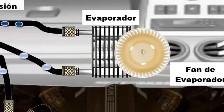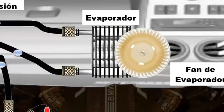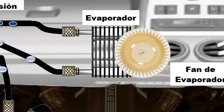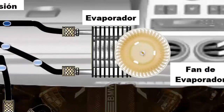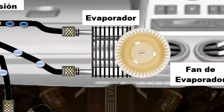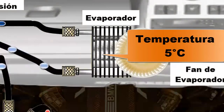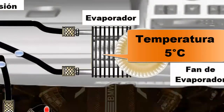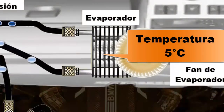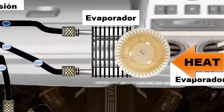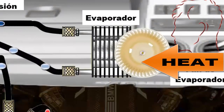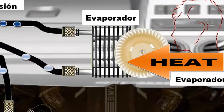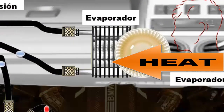Let's start with the evaporator, an essential part of the system. Here, the refrigerant gas pressure is low, allowing the temperature to reach approximately 5 degrees Celsius. This condition enables efficient removal of heat from the vehicle's occupants.